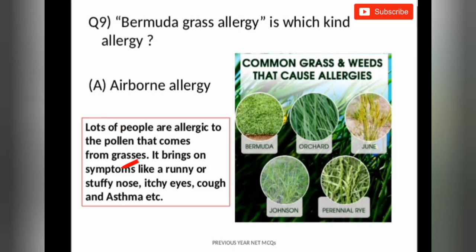So we should know that lots of people are allergic to the pollen that comes from grasses. It brings on symptoms like running nose, itchy eyes, cough and asthma. So the common grass and weeds that causes allergies are Bermuda grass, orchard, June species, Johnson and perennial rye.